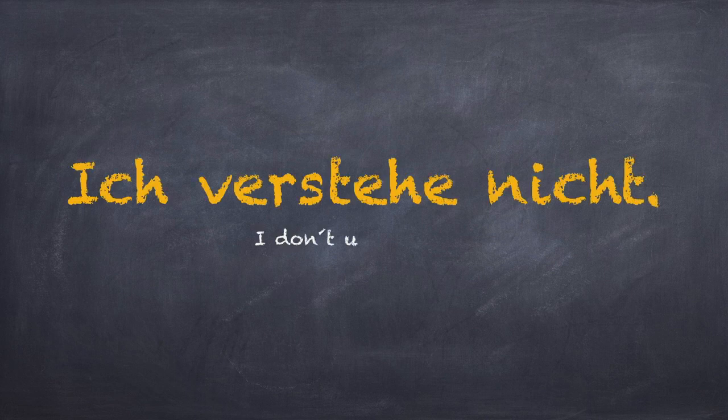I believe you have already made out from the previous structures — ich is for I. The next one: Ich verstehe nicht. Please notice, the sound of 'ver' is like ver — verstehe.